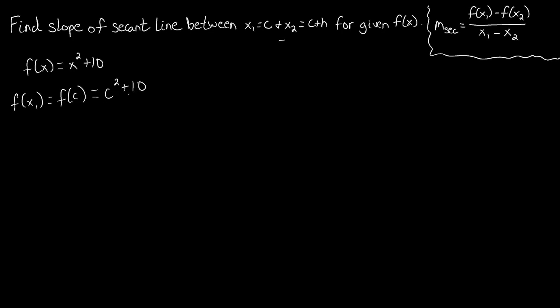Since this is a variable, this is a number, we can't really combine them in any form or fashion. So we're left with c squared plus 10.